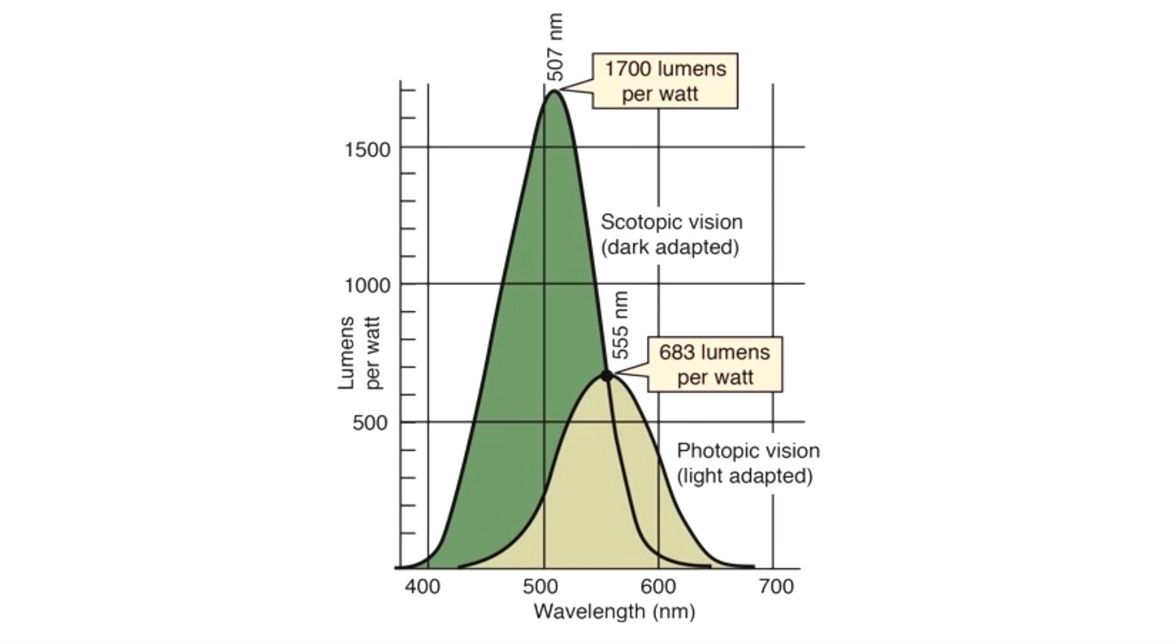And as you can see, we get a lot more visibility to the human eye in scotopic vision than we do in photopic vision. So technically speaking, 507 nanometers is going to be the brightest and most visible to the human eye under dark conditions. But what does this all mean?